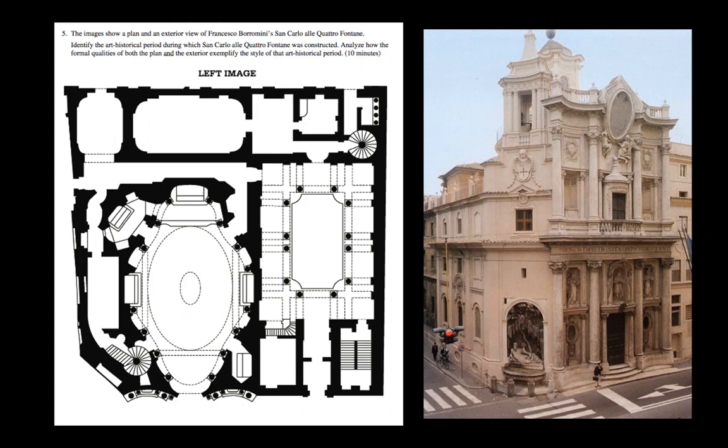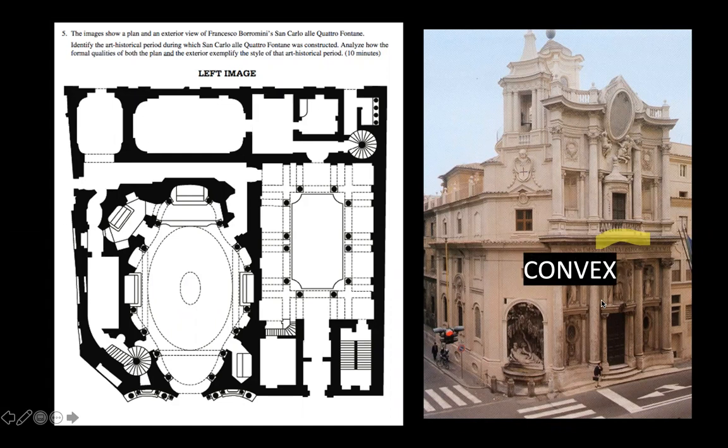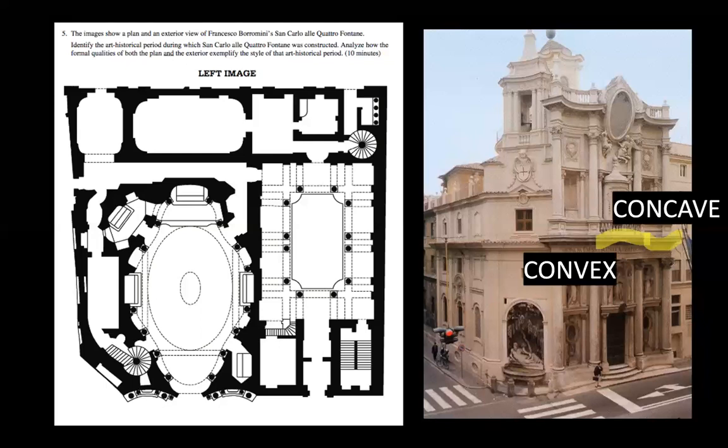We're going to do our two Baroque architecture pieces. This one's number 88, St. Charles at the Four Fountains by Borromini. The College Board wants us to know the outside front facade, the floor plan, and then the interior. On your front facade picture, you have this waving line that the columns are holding up — it goes convex, concave.